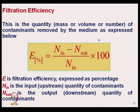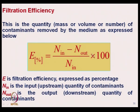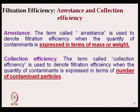The filtration efficiency E is expressed as a percentage, where N_in is the upstream quantity of contaminants and N_out is the quantity downstream, which is out of the filtration medium. The formula is: E = (N_in − N_out) / N_in, expressed in percentage. This filtration efficiency can be expressed in two ways: one is arrestance and another is collection efficiency.